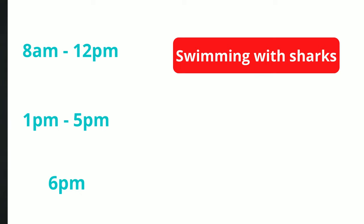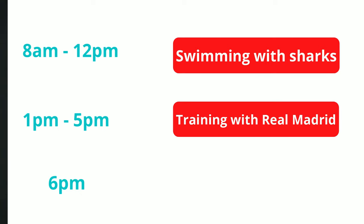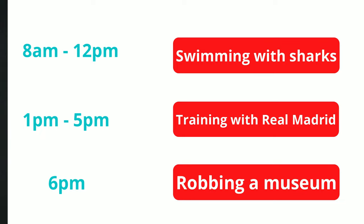A day in my life. You and your student create a fictitious schedule of each other's lives — it doesn't need to be realistic. For example: from eight to twelve, swimming with sharks; one to five, training with the Real Madrid football club; six, robbing a museum. Once you are done, the other person has to ask yes/no questions until they figure out what you are doing at that time — such as 'Am I in a dangerous place?' or 'Am I underwater?'